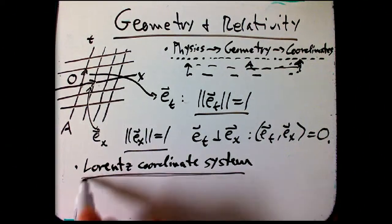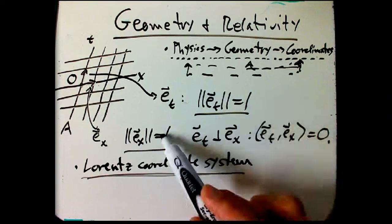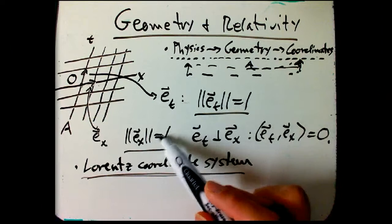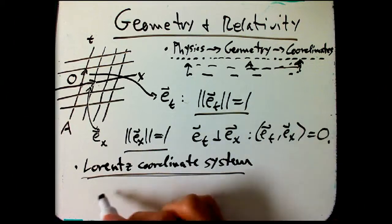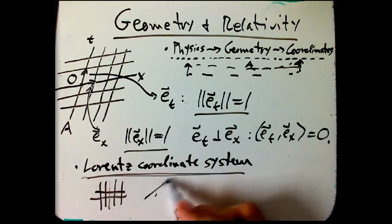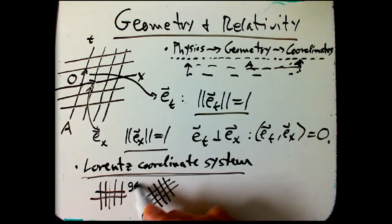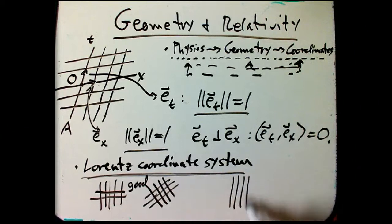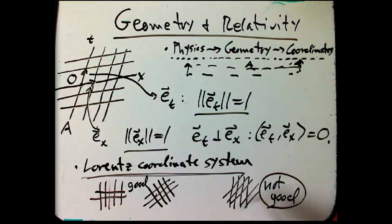This is called the Lorentz coordinate system, where it's very much like the usual kind of coordinate system you would have in ordinary geometry. You have the unit vectors along the coordinate axis be unit vectors, and they're supposed to be orthogonal. These are good for Euclidean geometry. This kind of coordinate system is not a good one for Euclidean geometry. It's something you can use, but the formulas will not be as nice.